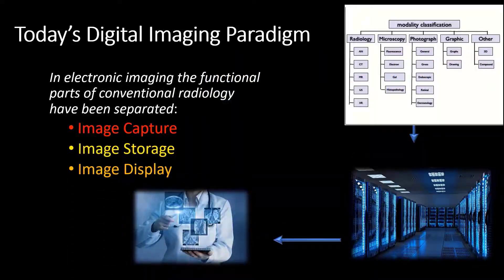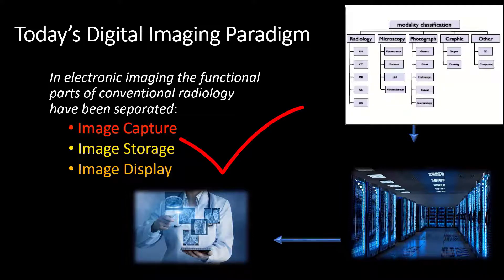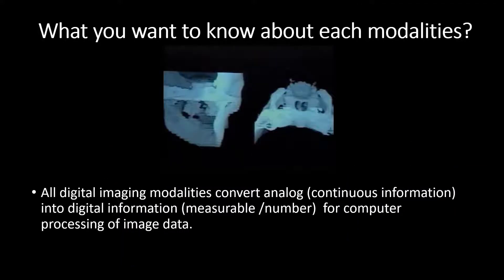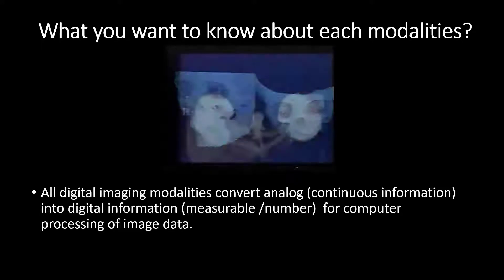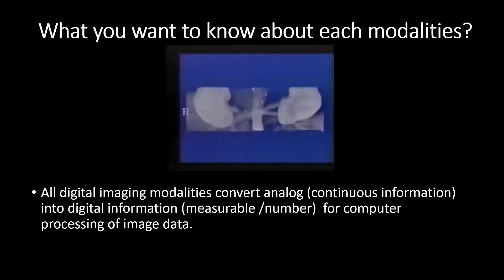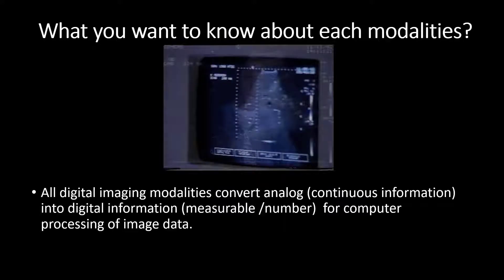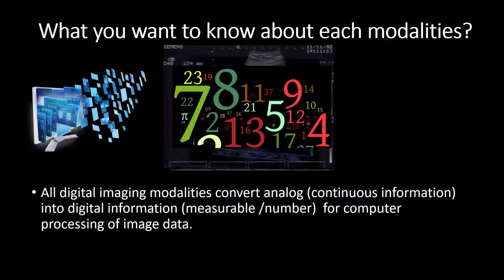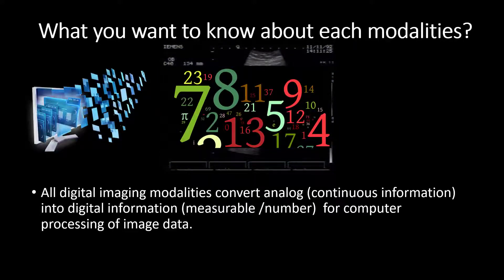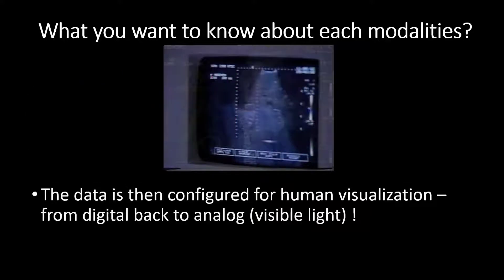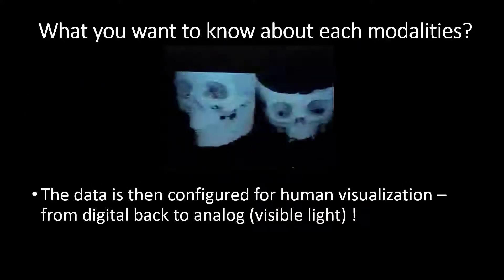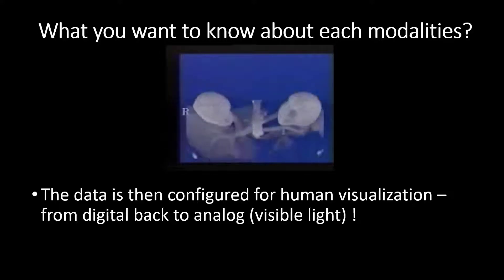In electronic imaging, the functional parts of conventional radiology have been separated into image capture, image storage, and image display. All digital imaging modalities convert analog or continuous information into digital or discrete information, or finite numbers, for computer processing of the image data. This data is then configured to be visualized on a monitor by human. This is the process of analog to digital and digital to analog conversion.